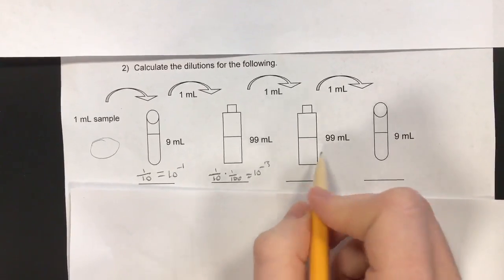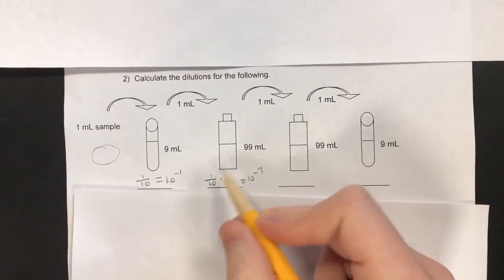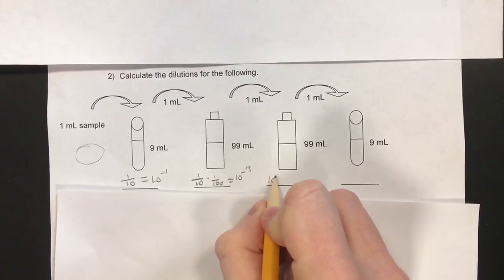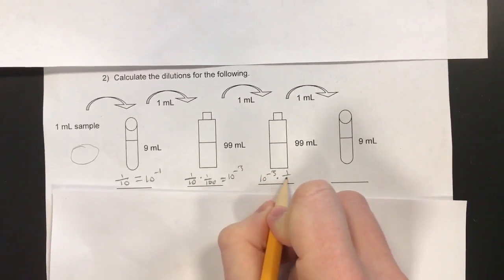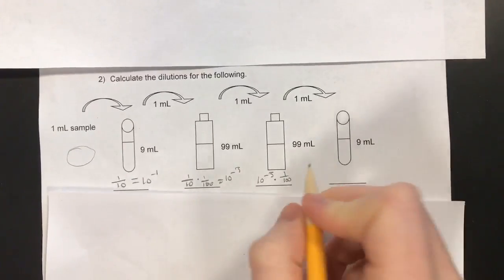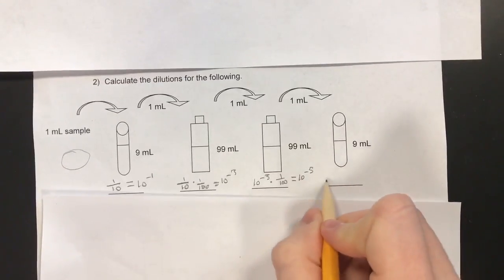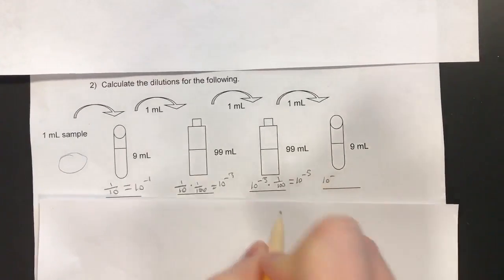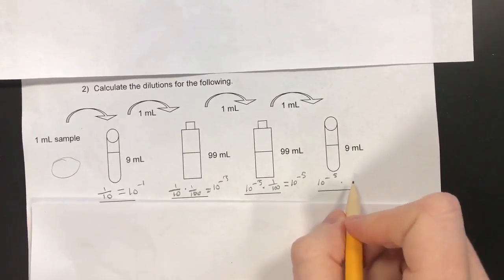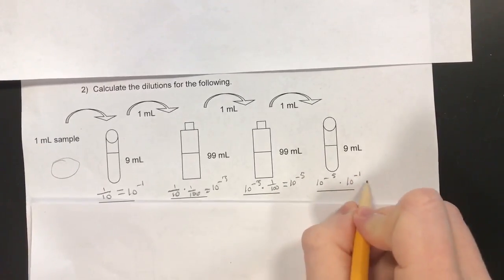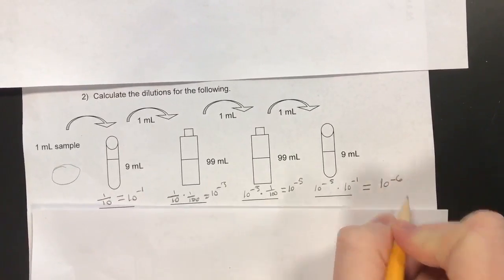For the next one we also have another 1 to 99, but don't forget to add in the other dilutions. So we have 10 to the negative 3 from the last ones and you're going to multiply that by 1 over 100, which is also equal to 10 to the negative 2. You're going to add those exponents up and it's going to be 10 to the negative 5. We're going to take that 10 to the negative 5 and multiply it by this one, which is 1 plus 9 equaling 1 over 10, also 10 to the negative 1. You're going to add those exponents together and it's going to equal 10 to the negative 6.